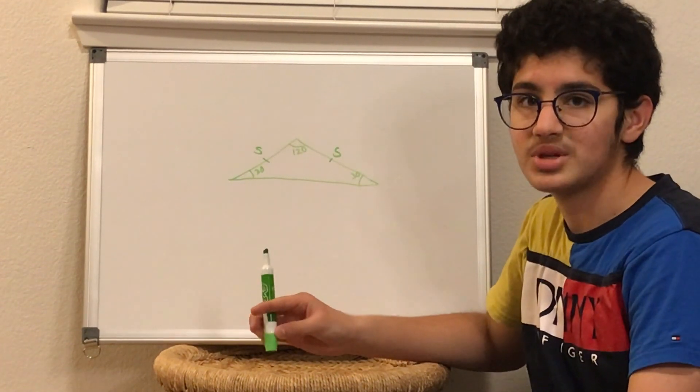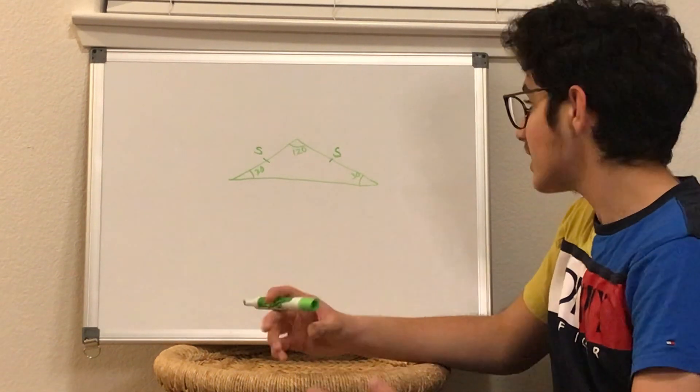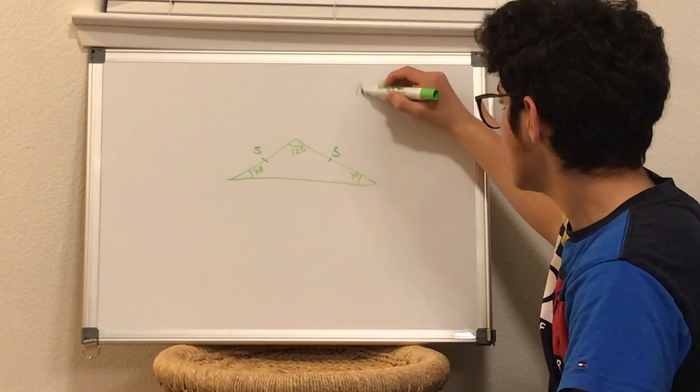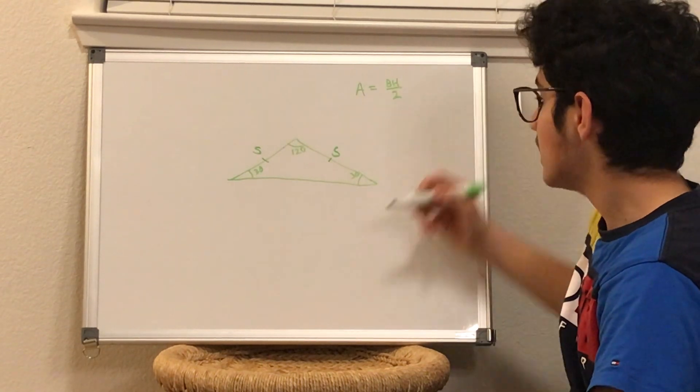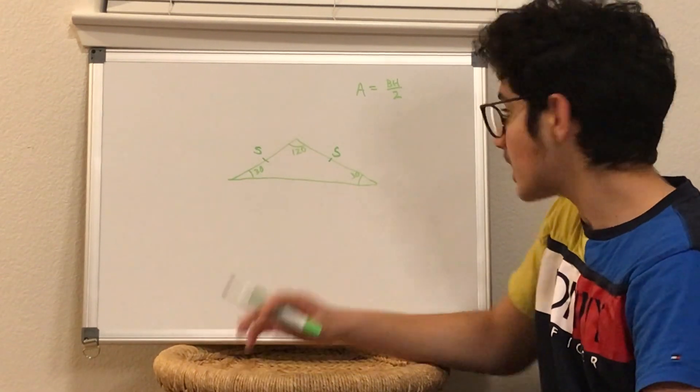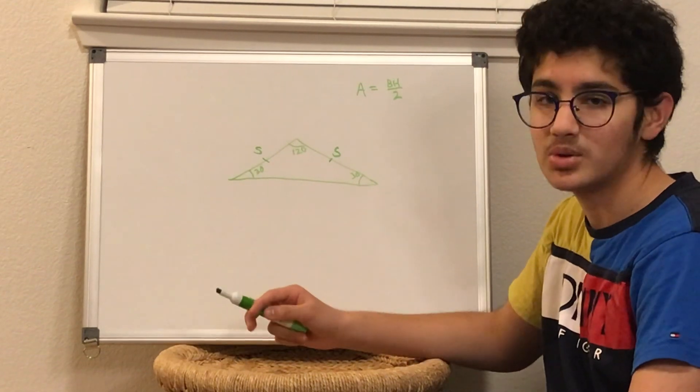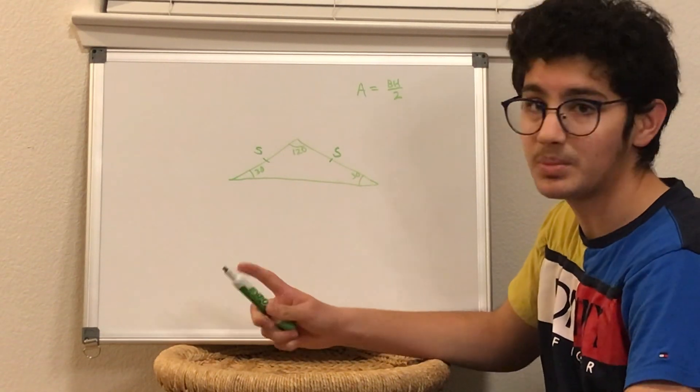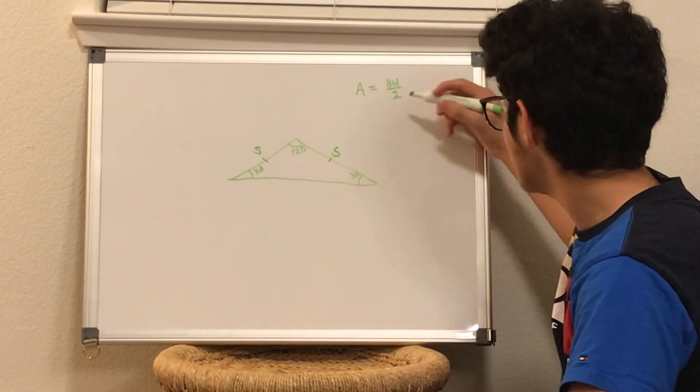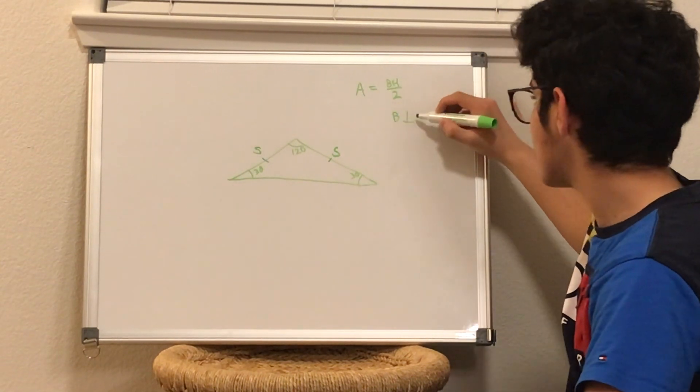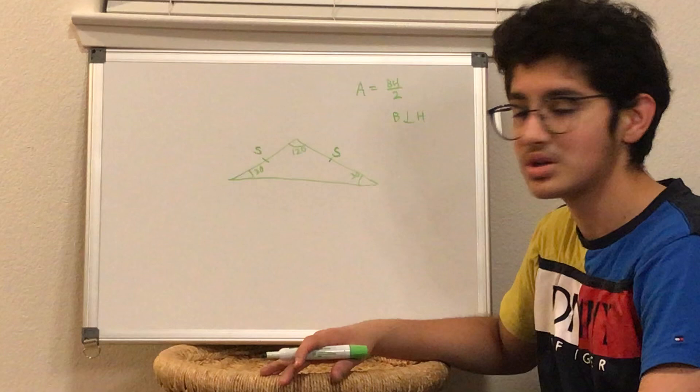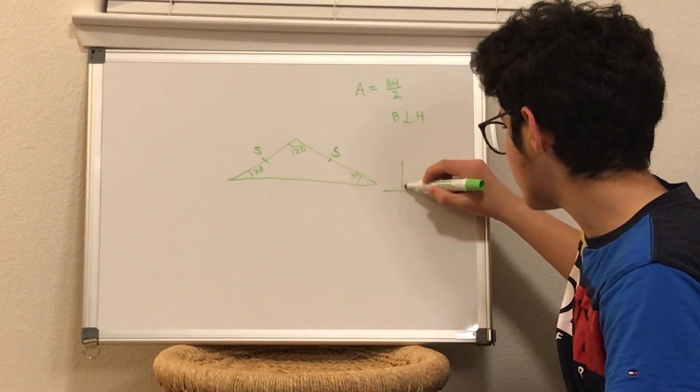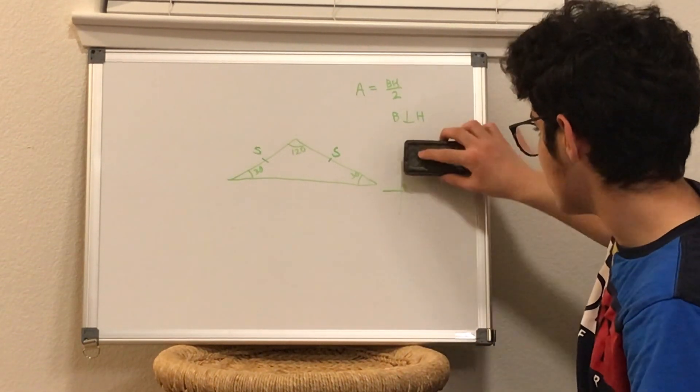Now how do we go on from this? Well, we need to find the area. The area is equal to the base times the height over 2 and right now we don't have the base and the height. We can't multiply this and this and then divide by 2. That won't give us the area because the base and the height need to be perpendicular. The base is perpendicular to the height which means that they form 90 degrees with each other.